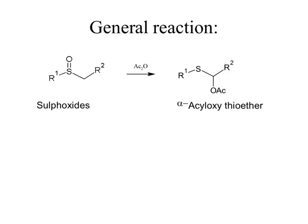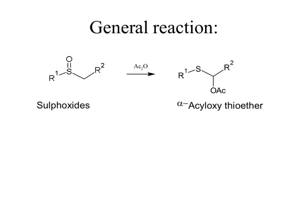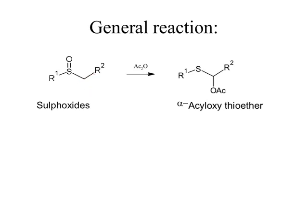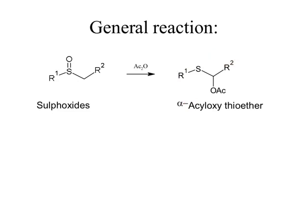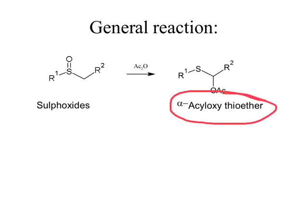This is the general reaction in which we have sulfoxide as our starting material. We need at least one alpha-hydrogen atom. In this molecule, here is the alpha-hydrogen atom — we have two alpha-hydrogen atoms. Sulfoxide on treatment with acetic anhydride leads to formation of alpha-acyloxy thioether. What you have to do is convert the S=O sulfoxide group into a sulfide group, that is S. Instead of S=O, you put S, and then from acetic anhydride you introduce an acetyl group on the alpha-carbon atom, and you will get the product: alpha-acyloxy thioether.